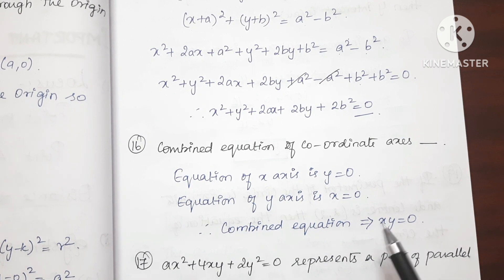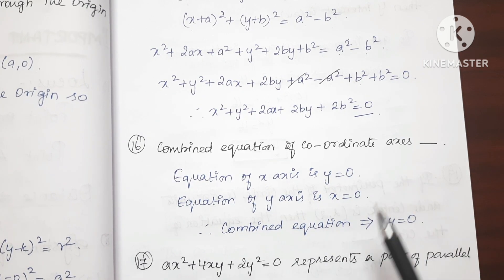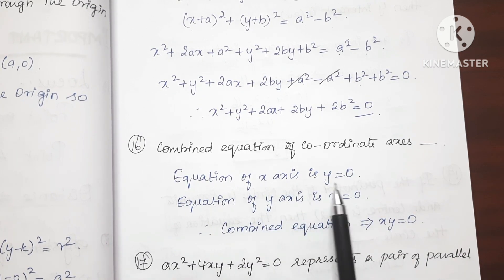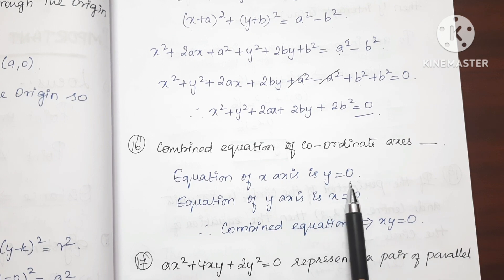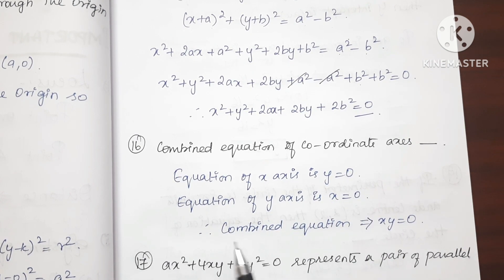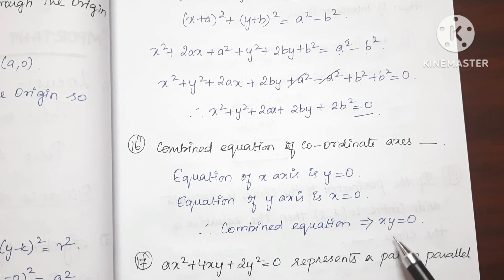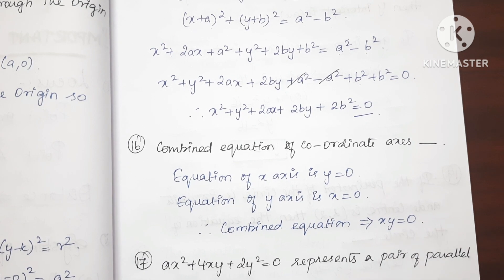Question 16: Combined equation of coordinate axes. The equation of the x-axis is y=0 and the equation of the y-axis is x=0. So the combined equation is xy=0.